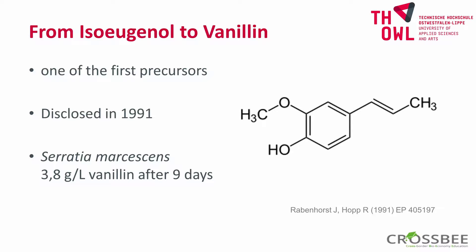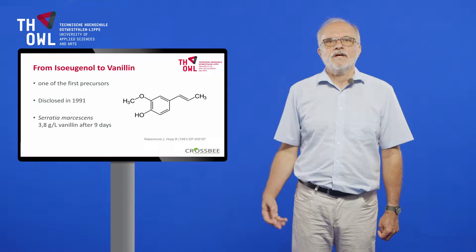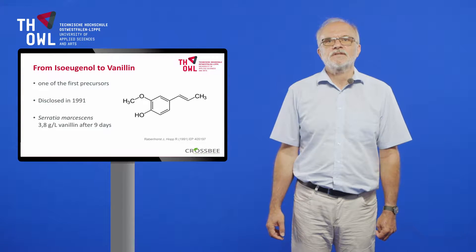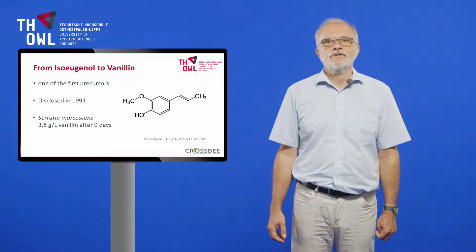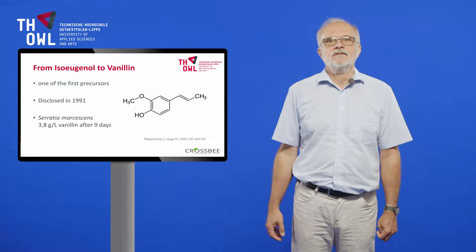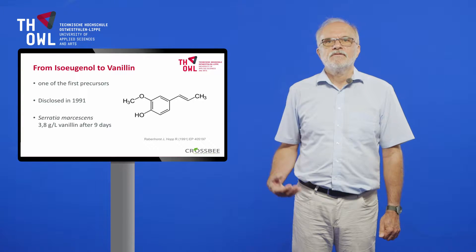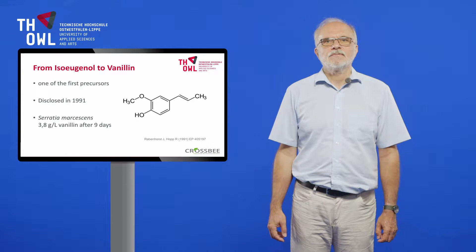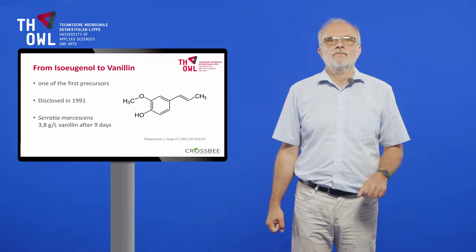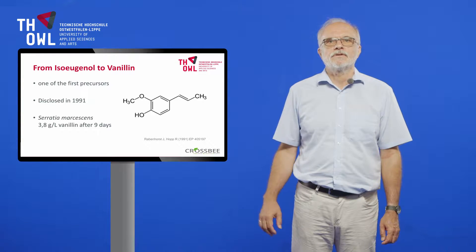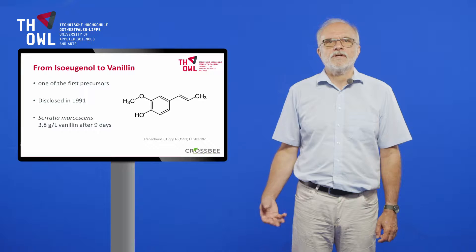Isoeugenol was one of the first precursors applied for the production of natural vanillin. In 1991, when I was at Haarmann and Reimer, we found that species of the genera Serratia, Enterobacter and Klebsiella were able to convert isoeugenol to vanillin. With Serratia assistance, we obtained after nine days a concentration of 3.8 g vanillin. This process was commercially not attractive, as most of the producing organisms belonged to security level 2. A second drawback was that natural isoeugenol is, in contrast to eugenol, only found as a minor component in a number of special essential oils like Ylang-Ylang and Nutmeg.